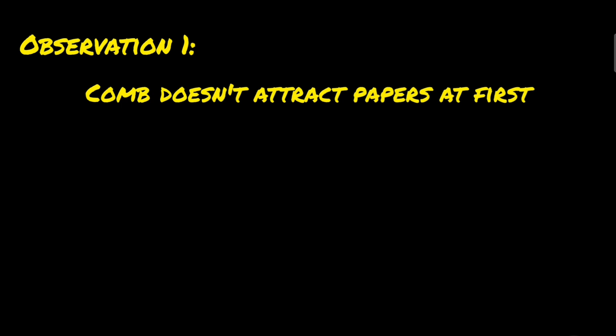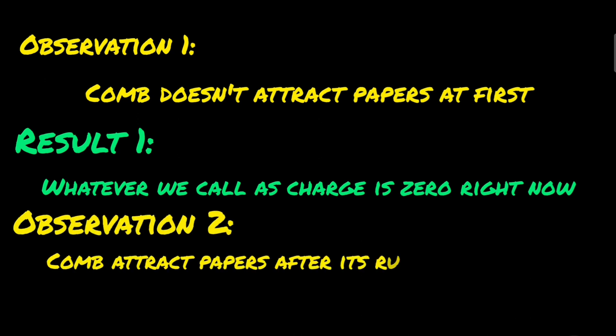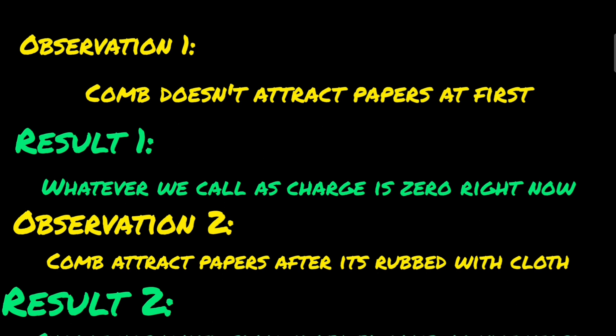Whatever this charge is would have some mass, and we know that mass can't be created out of nothing. Since we saw at first the comb wouldn't attract the papers, and then after rubbing it with the cloth it would attract the papers, and since mass cannot be created and the charge cannot be created, it means from these observations that whatever this charge is has moved from that piece of cloth to the comb.